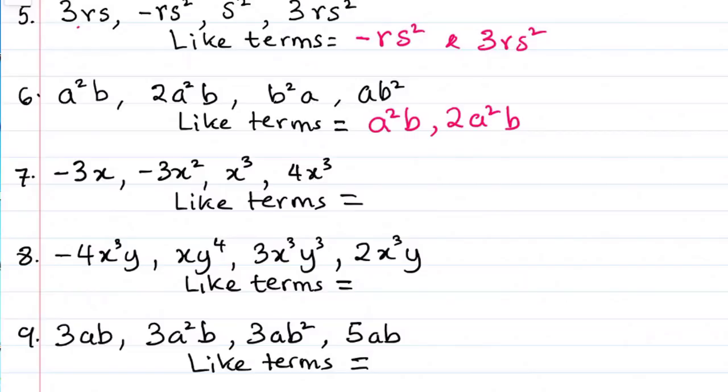At advanced level, we can argue that b squared a, and ab squared are similar. But for now, we want to go with the other, a squared b, and 2a squared b. We can easily add the similar like terms. We can easily subtract them.